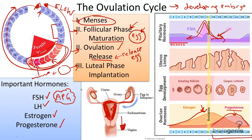Females are born with all of the eggs or ova that they will ever have. This cycle begins at puberty and ends generally during a time period called menopause.